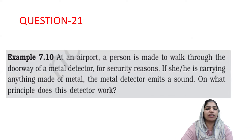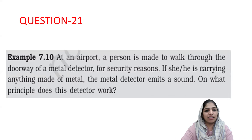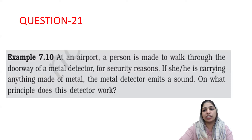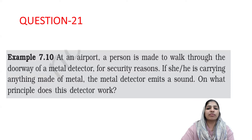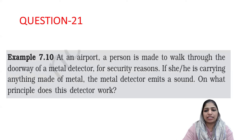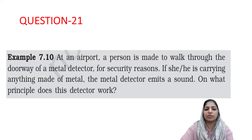Question number 21 is again from Alternating Current — a very interesting theory question about walking through the doorway of a metal detector. You need to explain the principle and reason behind it. That is the theory answer for this question.